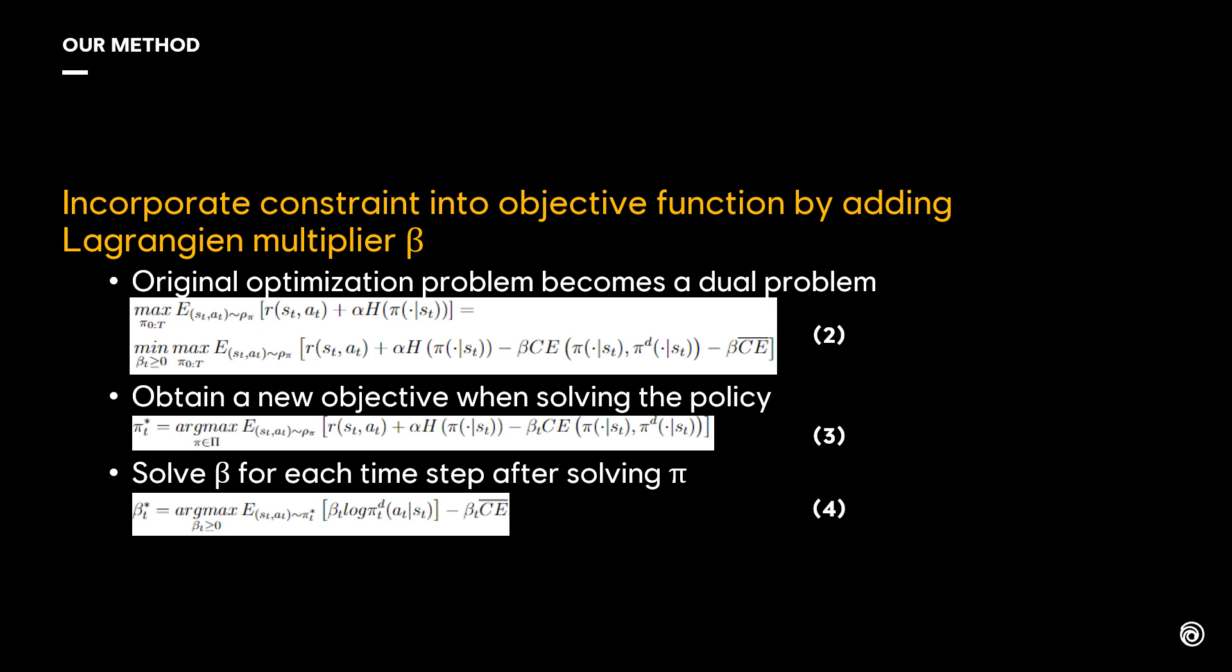When we solve the policy, we will obtain a new objective, shown in equation 3. Compared to the original objective of Soft Actor Critic, the new objective has an additional cross entropy term, which can be seen as a regularizer.